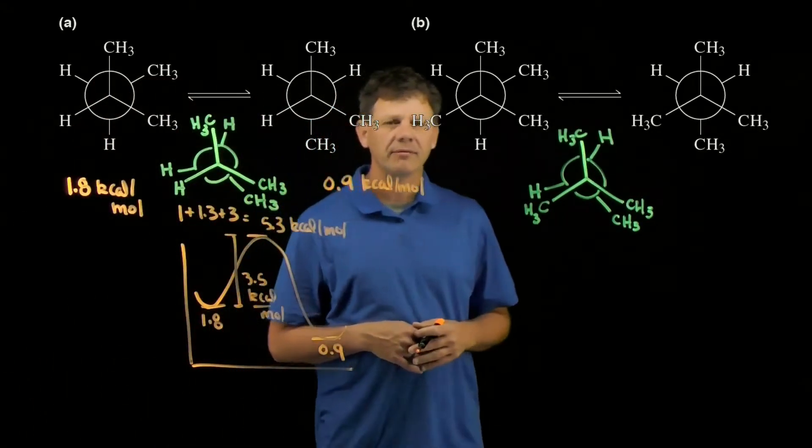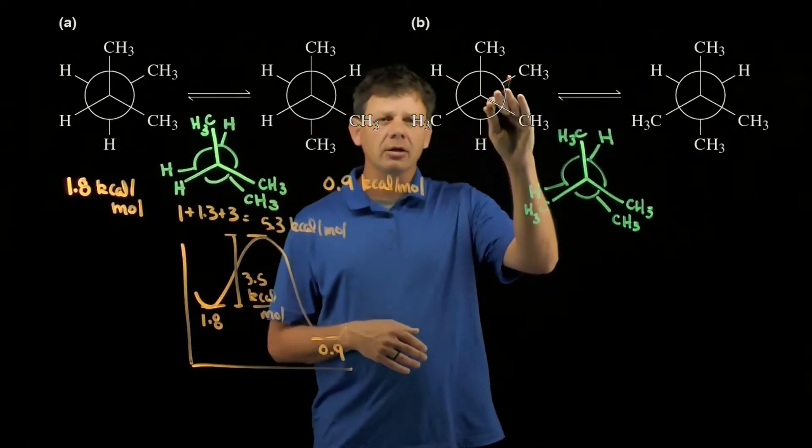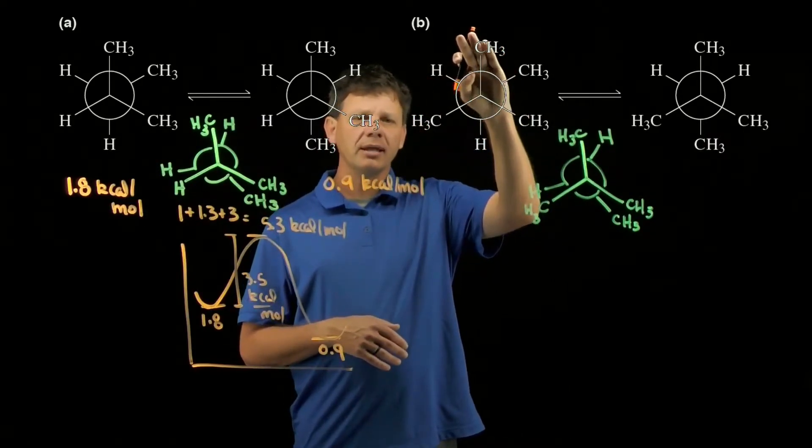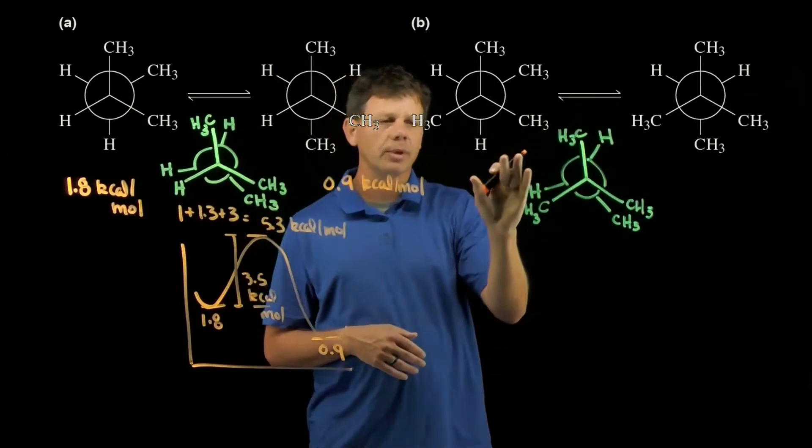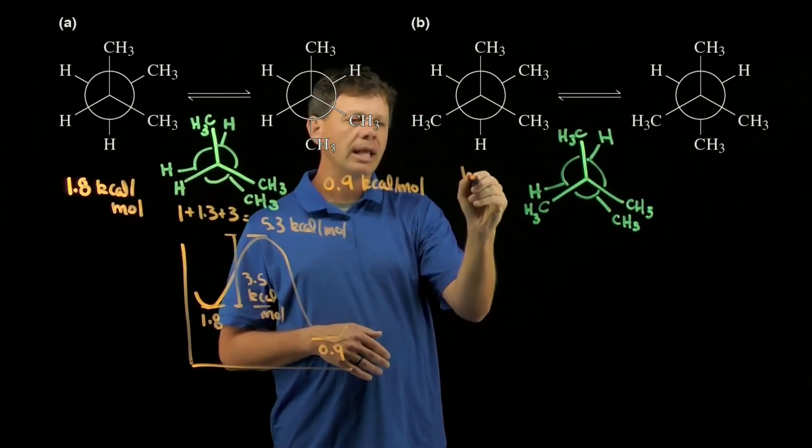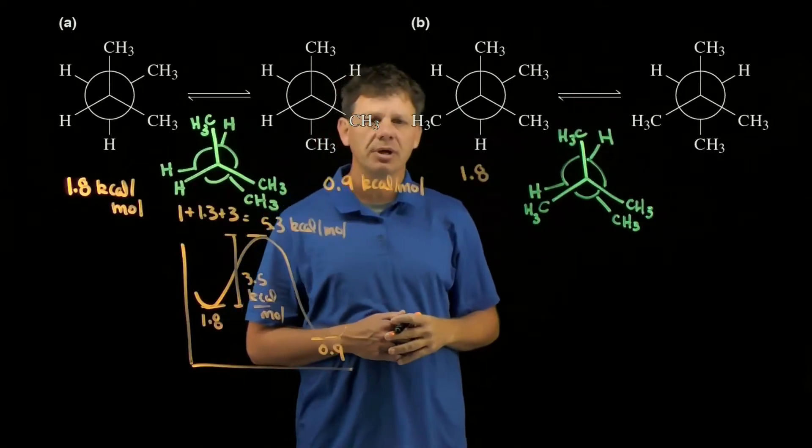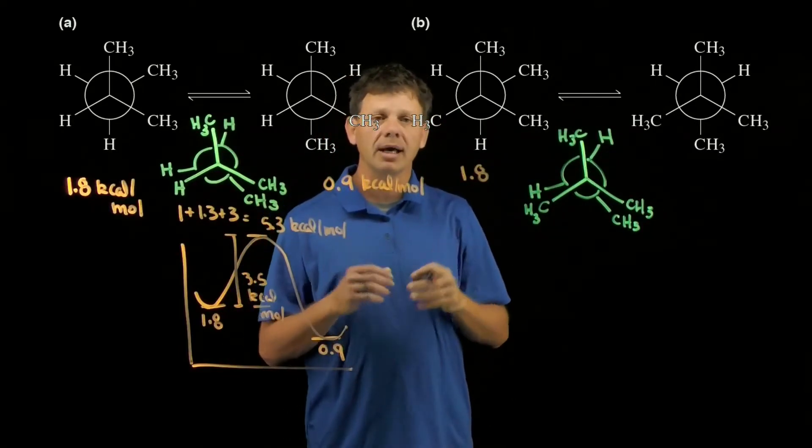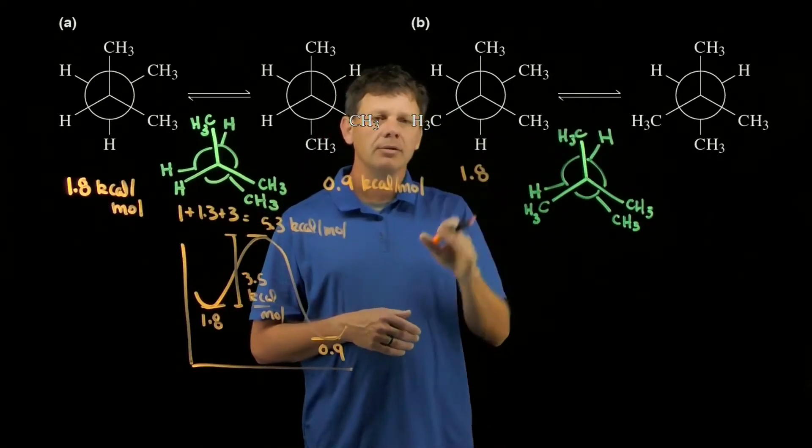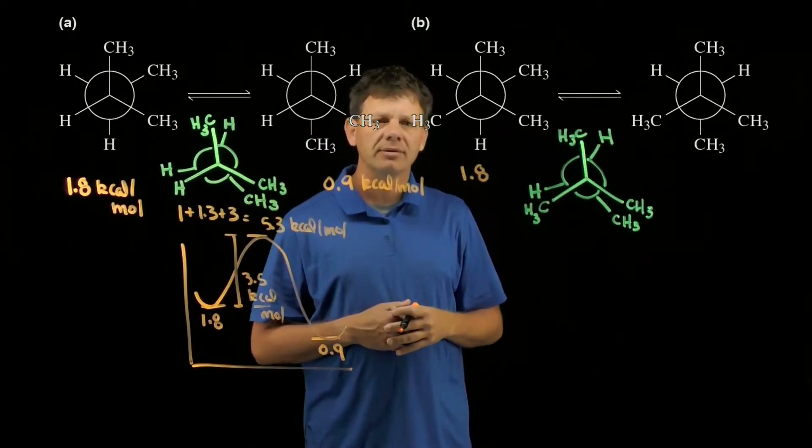Let's jump over and do the same thing for B. Notice here we have in B, once again, two gauche interactions in the reactant, so that's going to be 1.8 kilocalories—each gauche interaction worth 0.9, so 0.9 times 2 is 1.8. We'll leave off the units to save space.